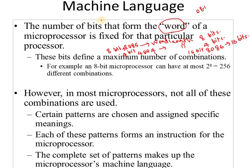The number of bits that form the word of a microprocessor is fixed for that particular microprocessor. These bits define a maximum number of combinations. For the 8085 microprocessor, we have 2 raised to 8 combinations, that is 256 combinations.